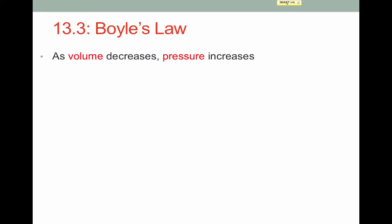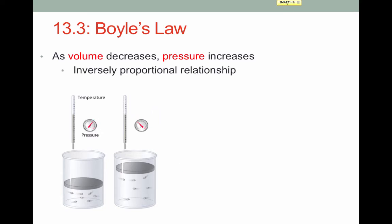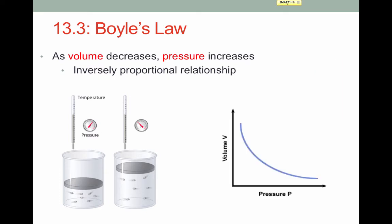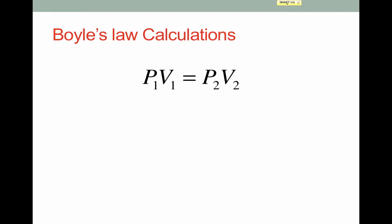This brings us to Boyle's Law. Boyle's Law relates volume and pressure, and tells us that as volume decreases, pressure increases. The container on the left has a smaller volume and a greater pressure than the container on the right, which has a larger volume and a smaller pressure. This is an inversely proportional relationship. The graph is not linear — as volume decreases, pressure increases. Amount of gas and temperature are both held constant. Mathematically: initial pressure times initial volume equals new pressure times new volume (P1V1 = P2V2).